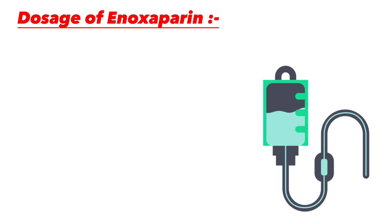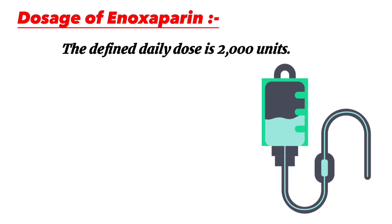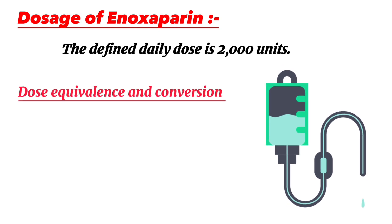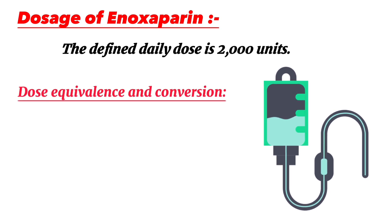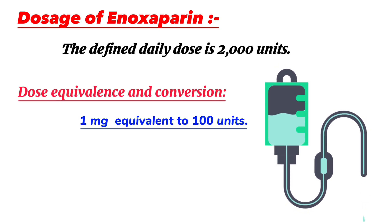Dosage of enoxaparin: The defined daily dose is 2,000 units. For dose equivalents and conversion: 1 milligram is equivalent to 100 units.